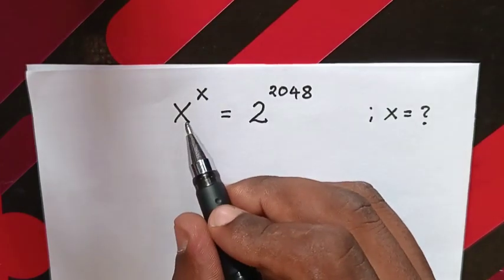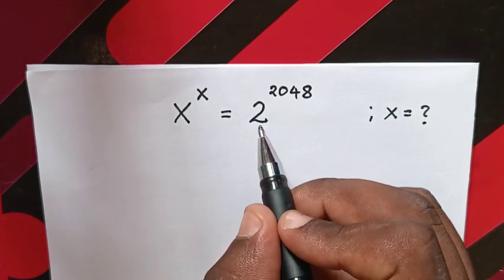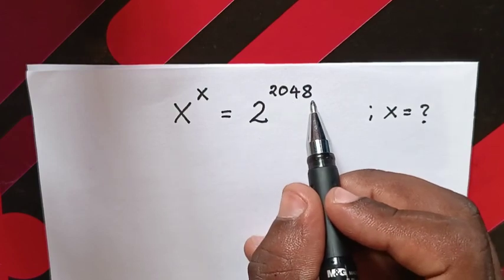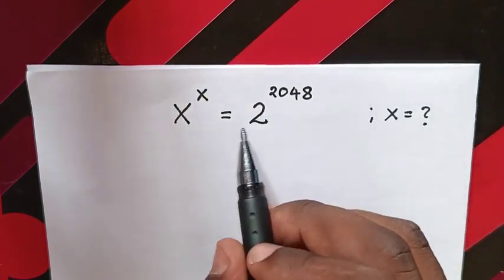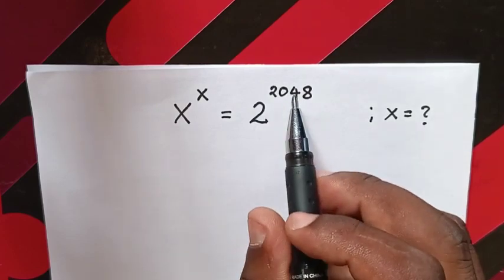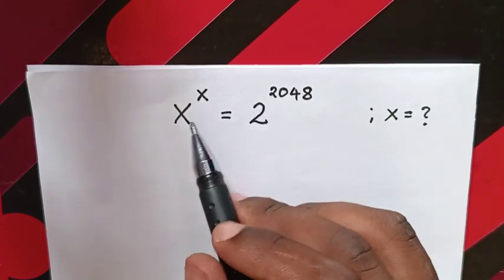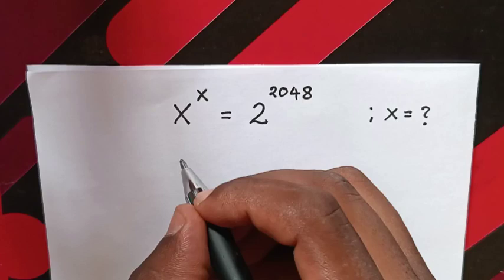Hello, how to solve x^x = 2^2048 to find the value of x. We make this have the same power with the same base as x^x.